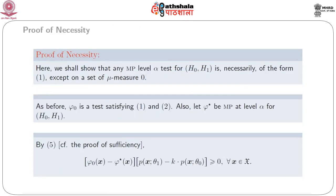Here, we shall show that any most powerful level-alpha test for testing H-naught against H-1 is necessarily of the form given in equation 1, except on a set on which the mu-measure is 0. As before, phi-naught is a test satisfying conditions 1 and 2. Also, let phi-naught be most powerful at level alpha for testing H-naught against H-1. Then, from the proof of sufficiency, we get that phi-naught(x) minus phi-star(x) times p(x; theta-1) minus k times p(x; theta-naught) is greater than or equal to 0 for all x belonging to script X.